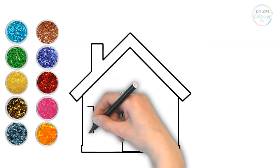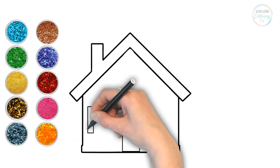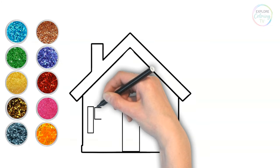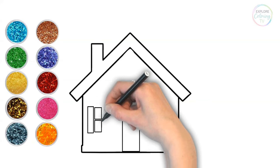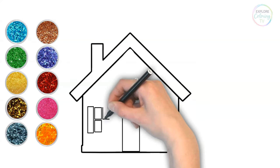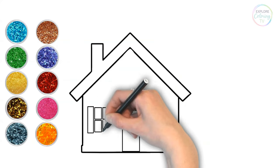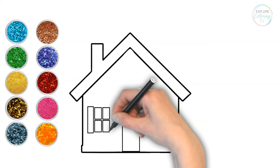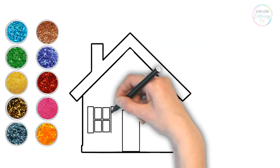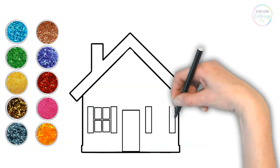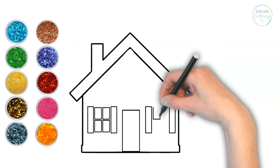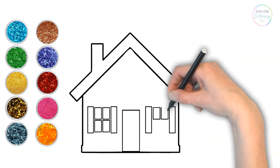Over here, we'll draw long rectangles for the outside window shutters. Using smaller rectangles, we'll draw in the windows. Look how lovely the shutters make the windows look. Now for the other window shutters and windows.